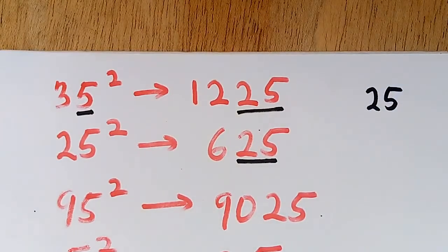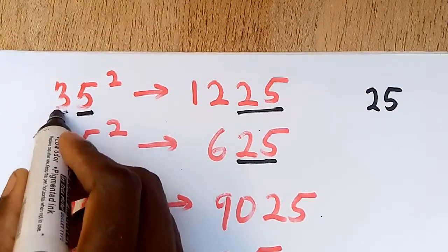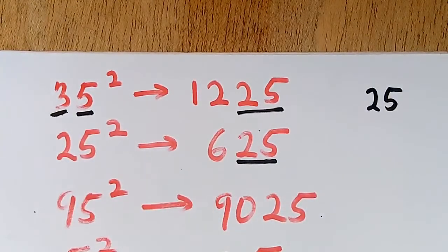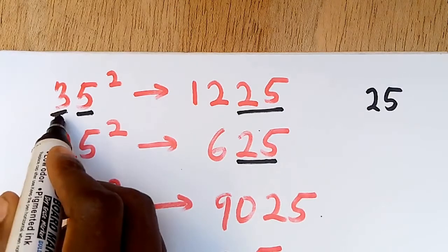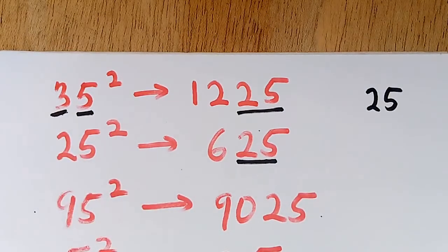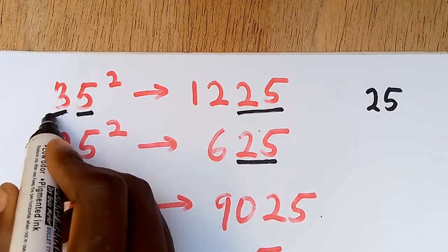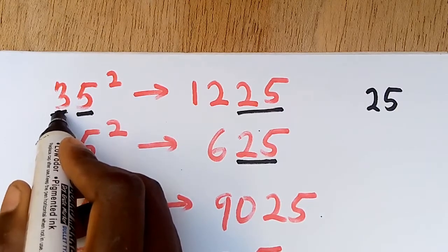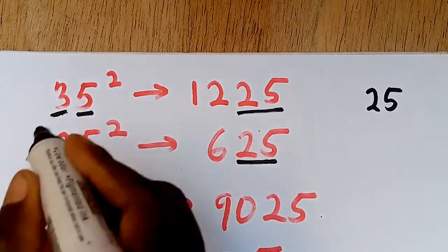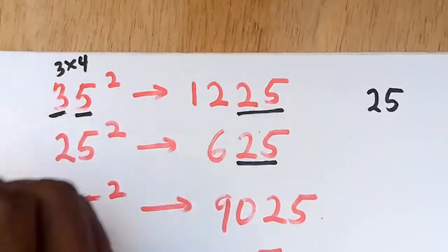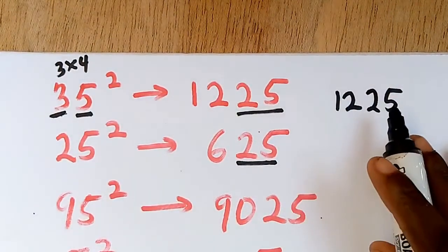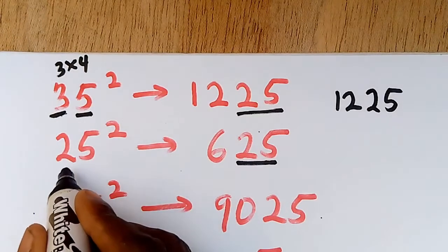Then you take the first digit, which is 3, and multiply it by the next number in counting — one, two, three — so the number after 3 is 4. You multiply 3 times 4 to get 12. Write 12 in front of the 25, and you have 1225 as the answer. Let's try 25 squared the same way.